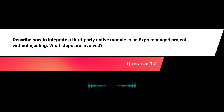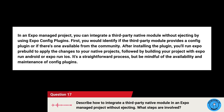Describe how to integrate a third-party native module in an Expo-managed project without ejecting. In an Expo-managed project, you can integrate a third-party native module without ejecting by using Expo Config Plugins. First, identify if the third-party module provides a config plugin or if one is available from the community. After installing the plugin, run expo prebuild to apply the changes to your native projects, followed by building your project with expo run:android or expo run:ios. It's a straightforward process, but be mindful of the availability and maintenance of config plugins.